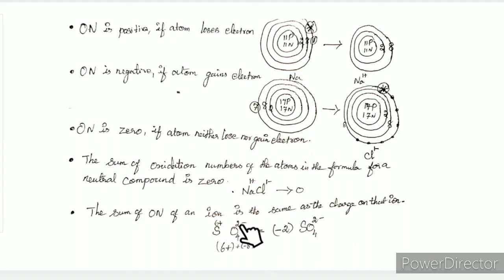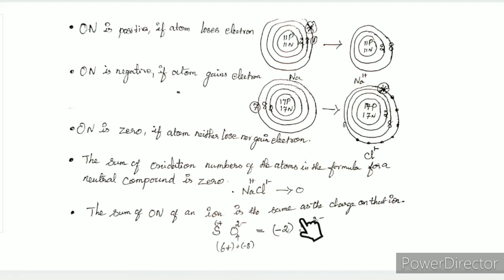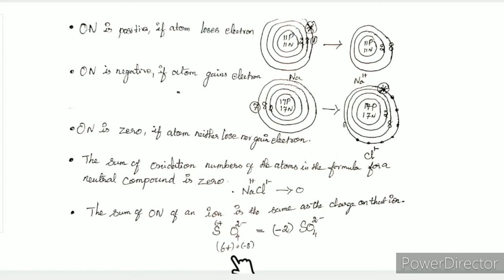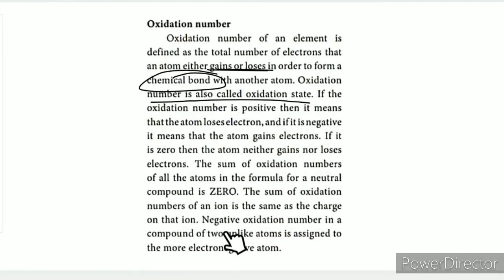In sulfate, oxygen is -2 and sulfur is +6. So 6+ plus 4 oxygens gives 4 × (-2) = -8, making the net charge -2. The oxidation number of a shared electron pair between two unlike atoms is assigned to the more electronegative atom.